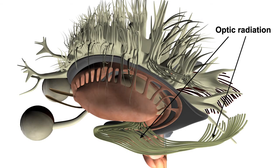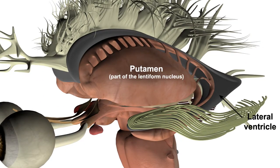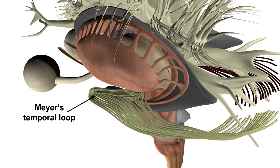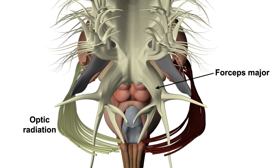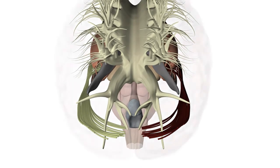Neurons of the lateral geniculate nucleus project to the primary visual cortex via the optic radiation. This is a large bundle of projection fibres that passes through the internal capsule between the lentiform nucleus and the inferior horn of the lateral ventricle. Fibres pass forward towards the temporal pole to form Meyer's temporal loop, then track back lateral to the forceps major and synapse on either side of the calcarine sulcus in the primary visual cortex.